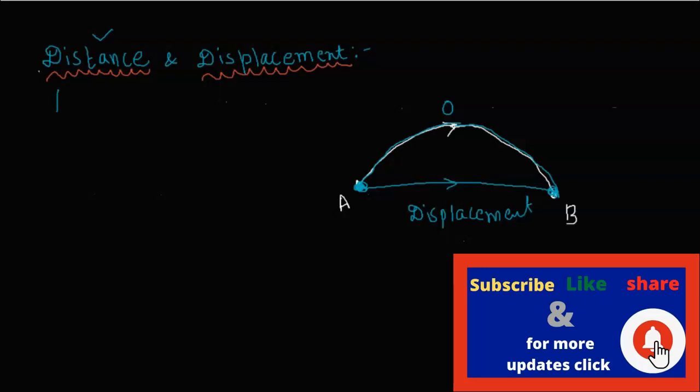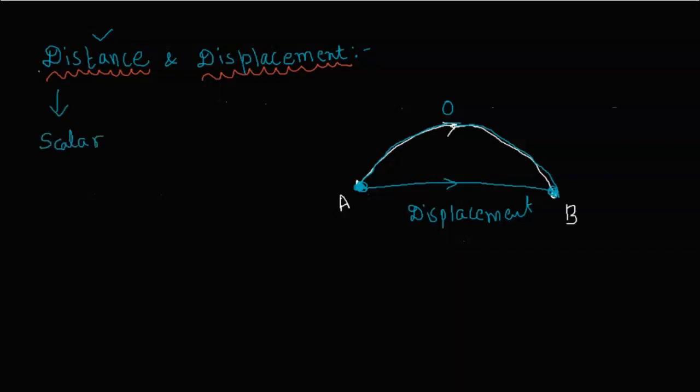Distance is a scalar quantity. This means it only has magnitude — it represents how much total path has been covered.